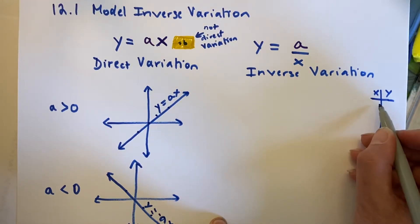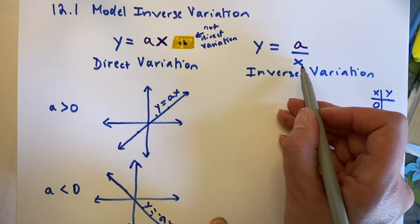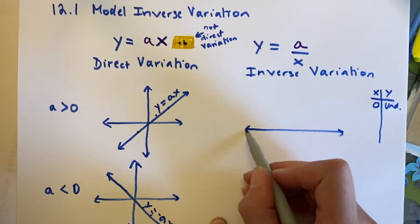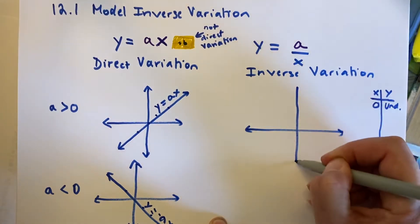If x is 0, well, you can't have x be 0, because you can't divide by x, right? So, that's undefined. So, x can never be 0. I'm going to start my graph so you see what I mean.